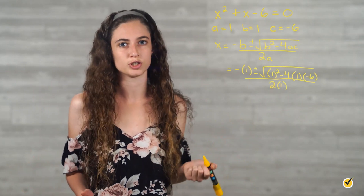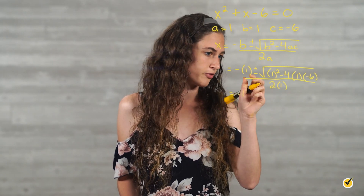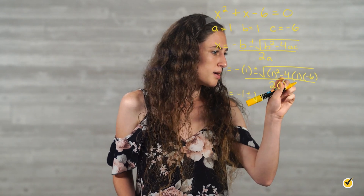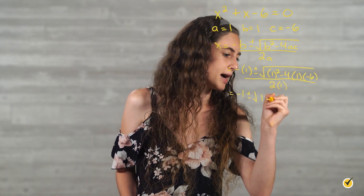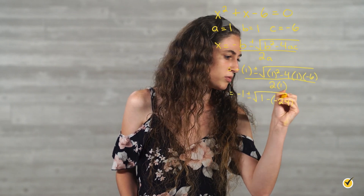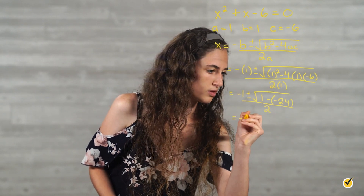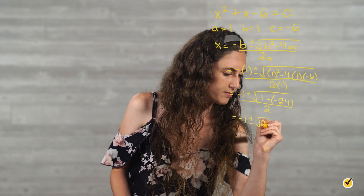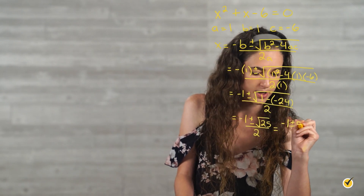From here, solve for x by simplifying. We're going to leave the negative 1 for now and move on. So we have the square root of 1 squared is 1, minus 4 times 1 times negative 6 is negative 24. So minus negative 24 over 2 times 1 is 2. Then 1 minus negative 24 is the same as saying 1 plus 24, which is 25. The square root of 25 is 5. So we have negative 1 plus or minus 5 over 2.